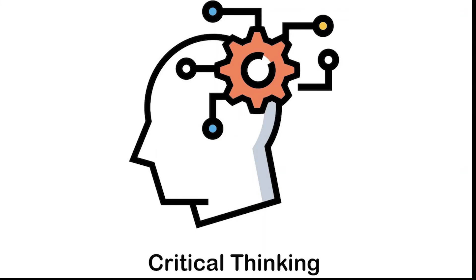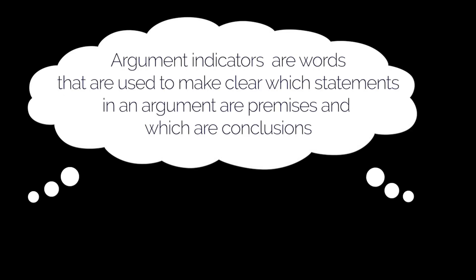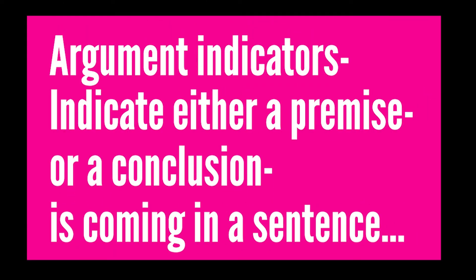So, when it comes to argument indicators, always remember that these are words that are used to make clear which statements in an argument are premises and which are conclusion. So they either indicate a premise or conclusion is coming in a sentence.